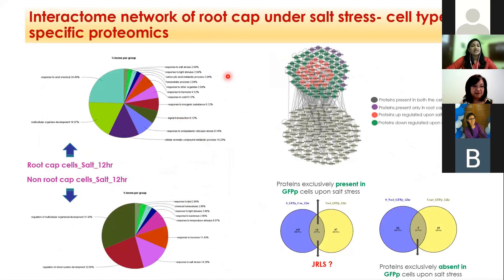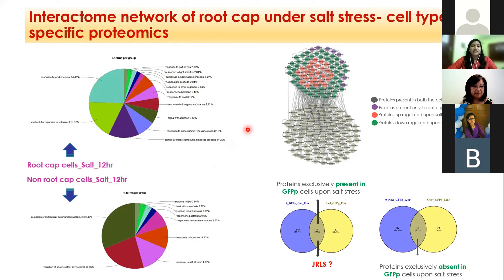From a brief analysis of proteins in root cap and non-root cap cells, GO enrichment shows that upon salt stress in both cell types, proteins are enriched for the response to salt stress. Importantly, in the root cap cells, many more GO terms are enriched compared to non-root cap cells under salt stress, showing that the root cap is more active upon salt perception and may be relaying signals into the internal gene regulatory network of the root. This is further supported by the interaction network of proteins in both cell types, where root cap proteins are very actively interacting with proteins present in the non-root cap cells as well.